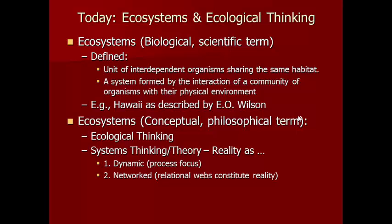A second point is that within systems thinking, we understand reality as networked. In other words, who you are and what you are is comprised almost more by the relationships you're nested in than by something that exists in the abstract. For example, you might understand a person as something separate from their community, or you might understand the community as coming first and a person emerging from within that network of relationships.